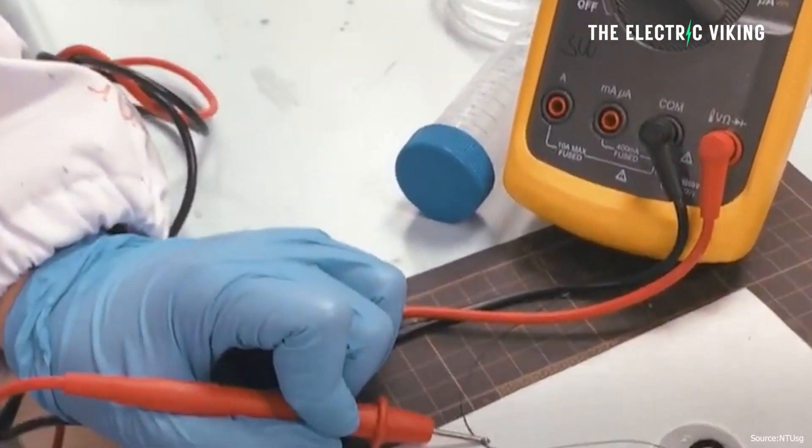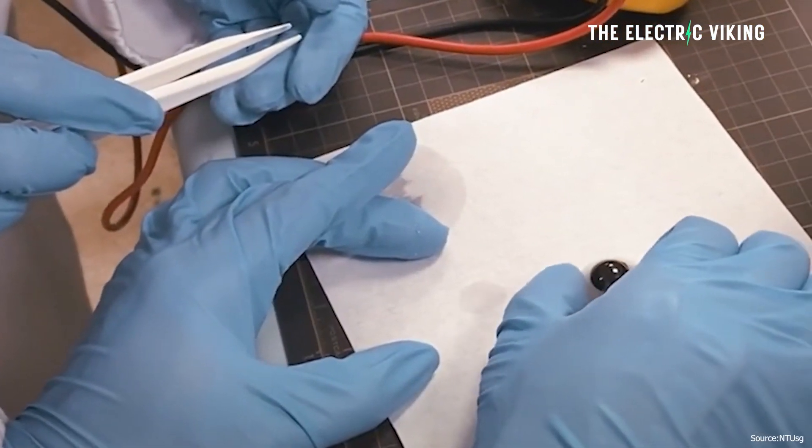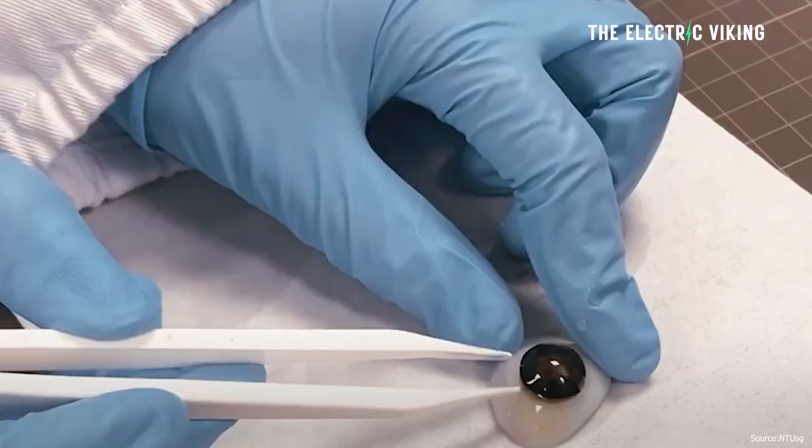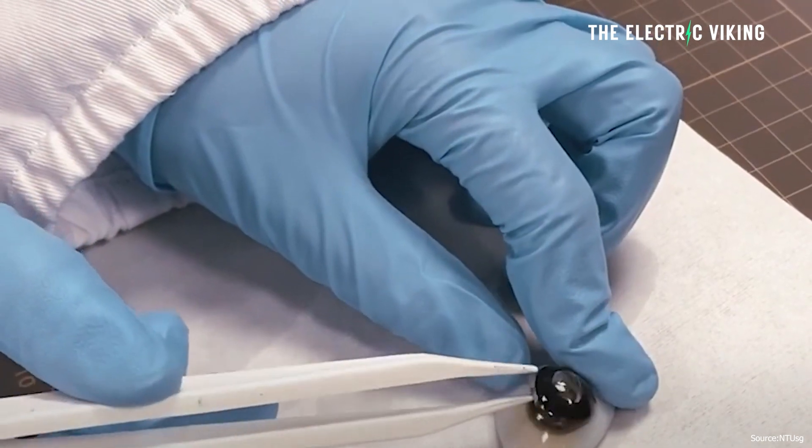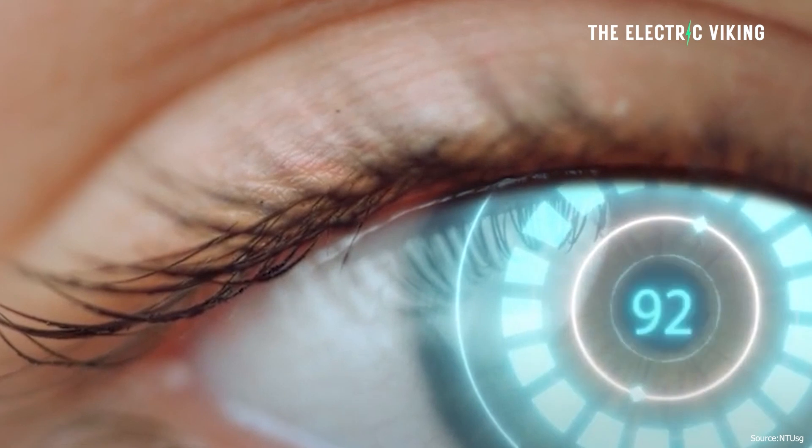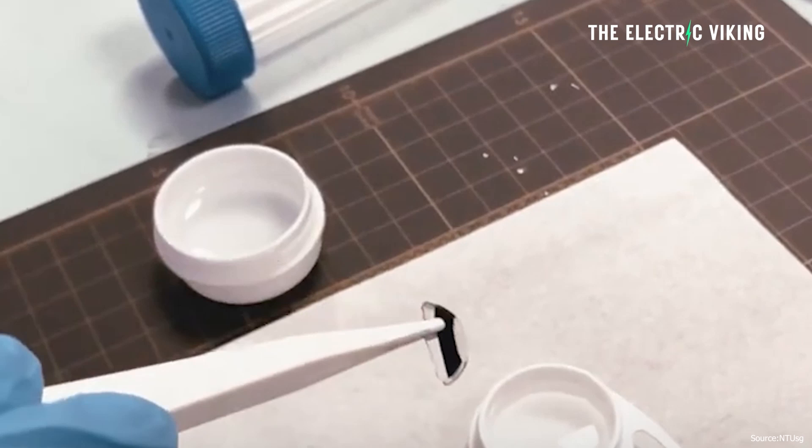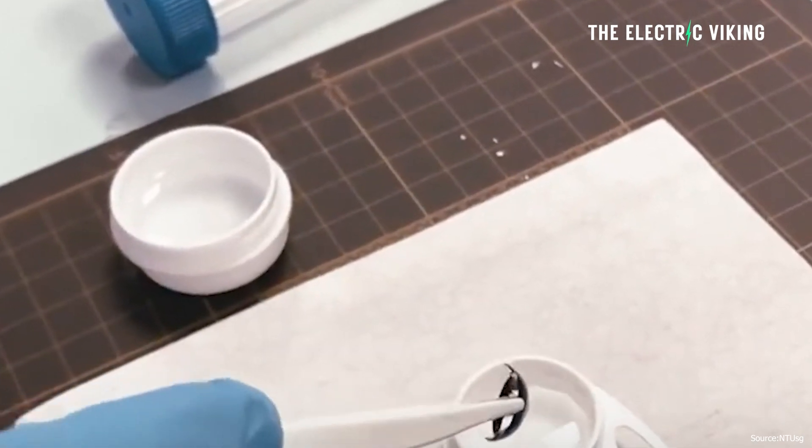Researchers at Nanyang Technological University in Singapore have created a flexible battery that's as thin as a human cornea. This innovative energy storage device charges itself when submerged in a saline solution, and it has the potential to create smart contact lenses in the future.